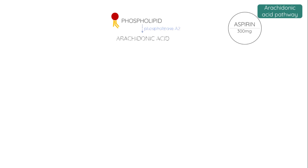One of the products of their breakdown is a fatty acid called arachidonic acid. This is used to make many different useful molecules, and one enzyme that is used to convert arachidonic acid is called cyclooxygenase.